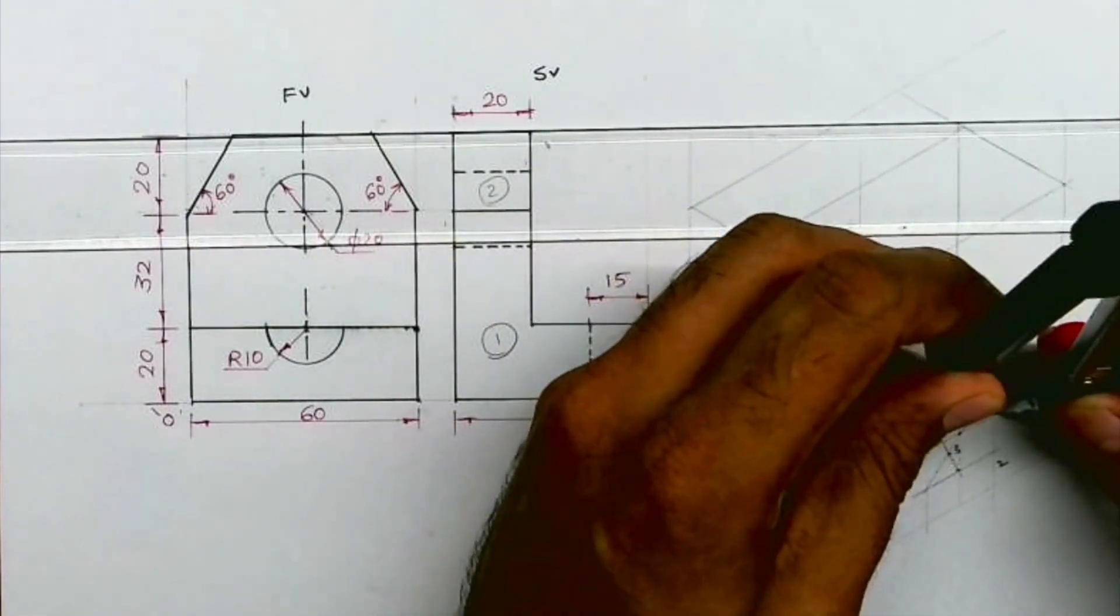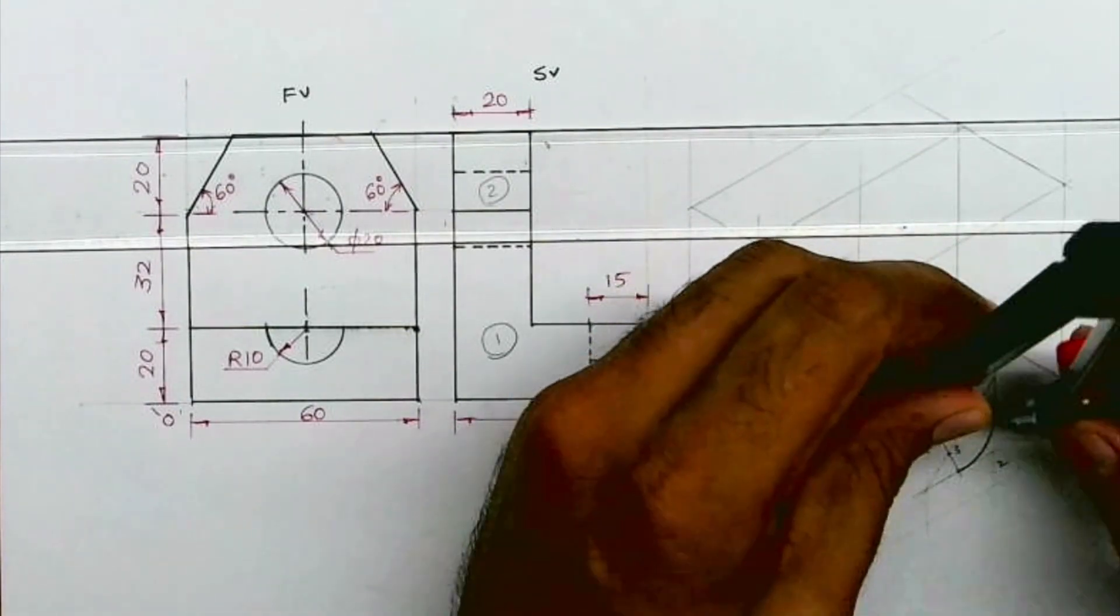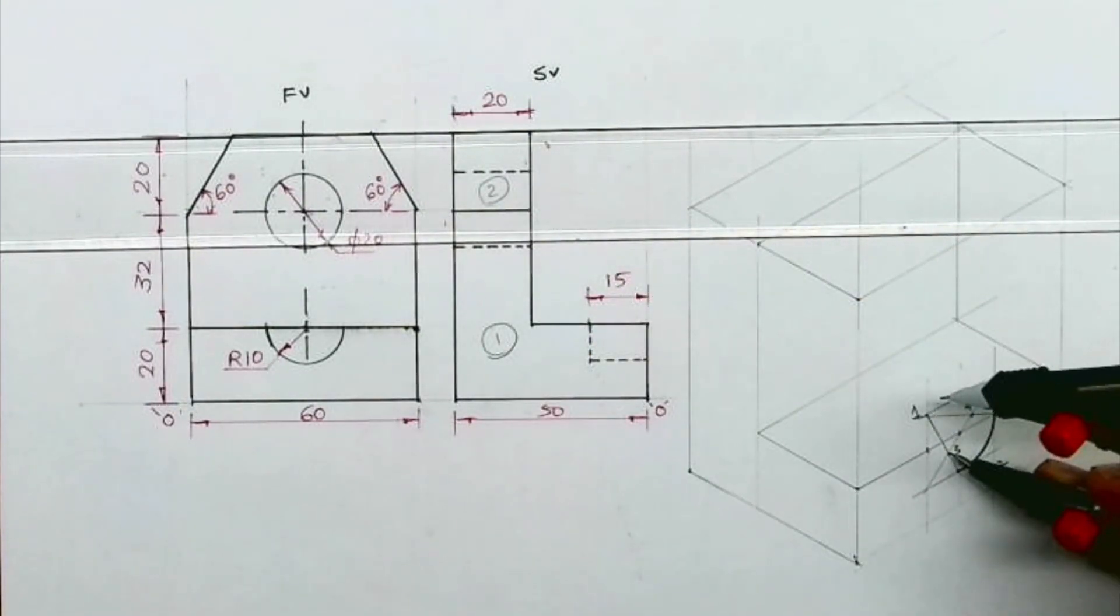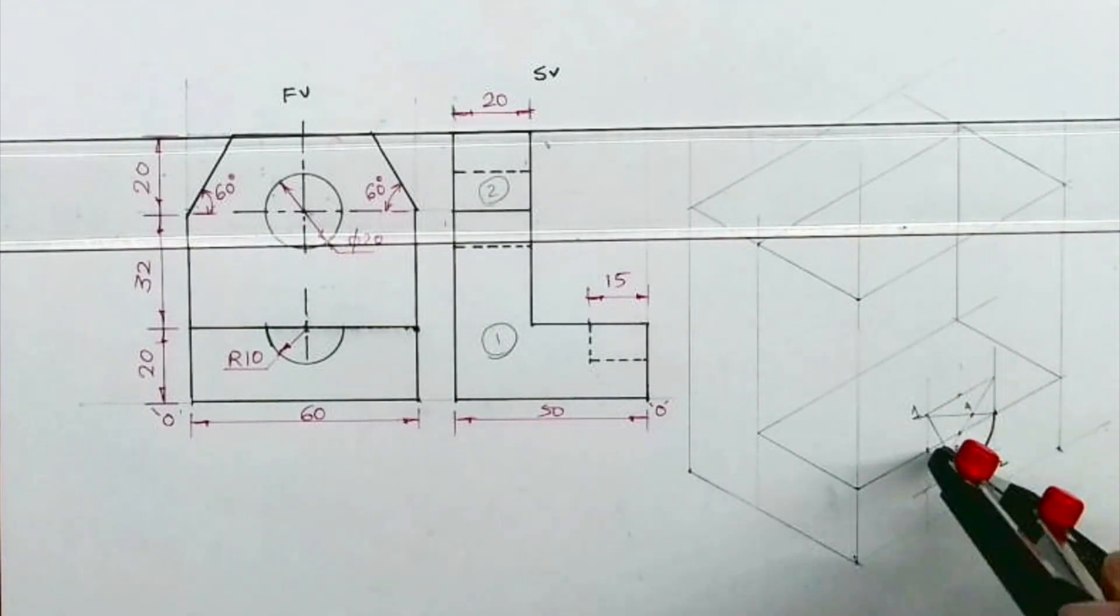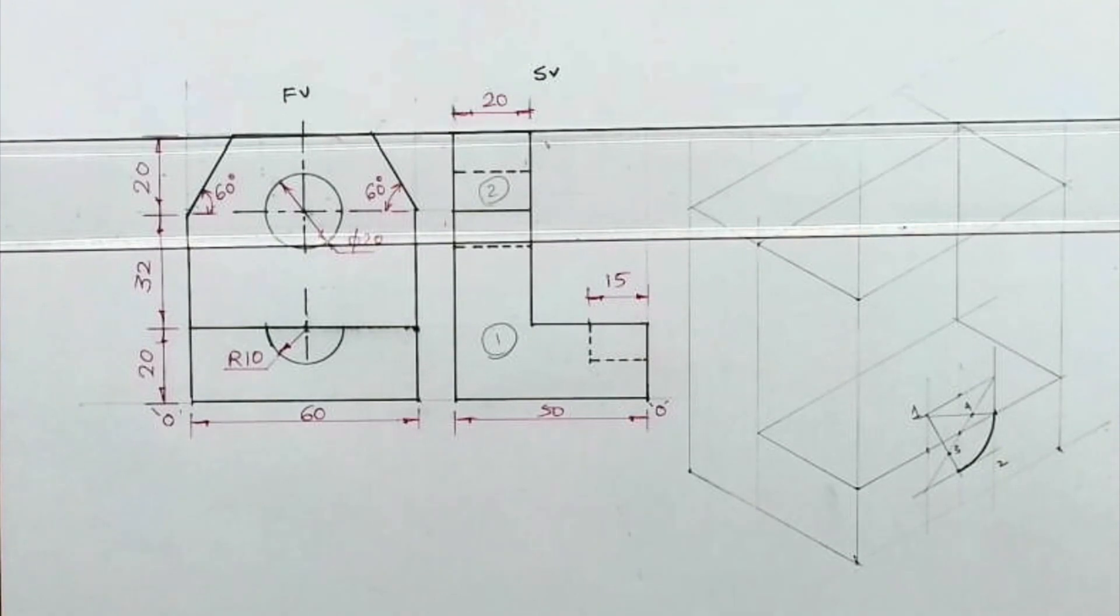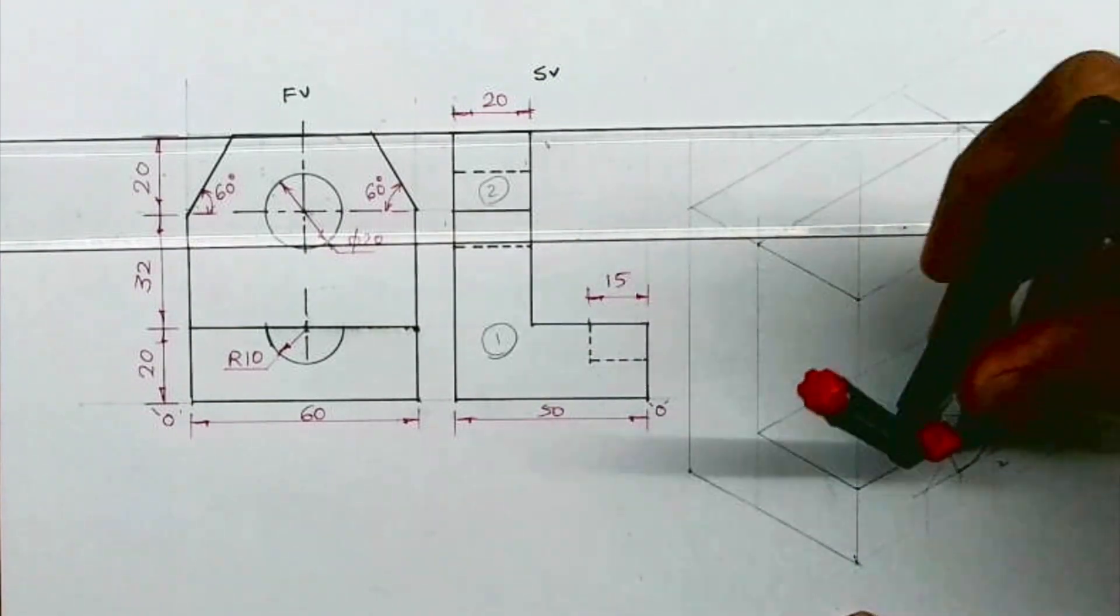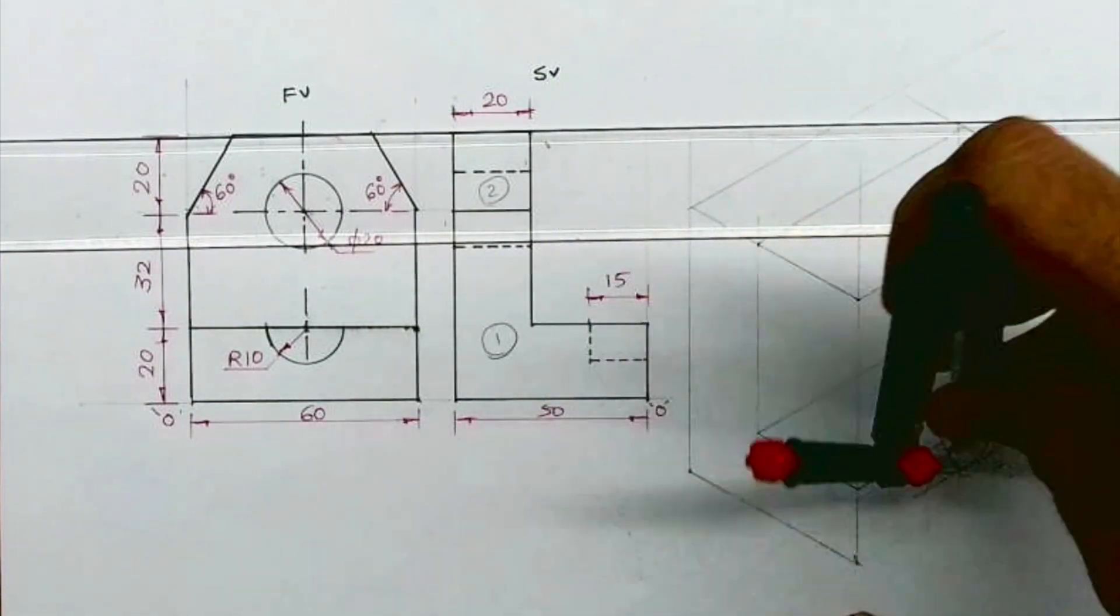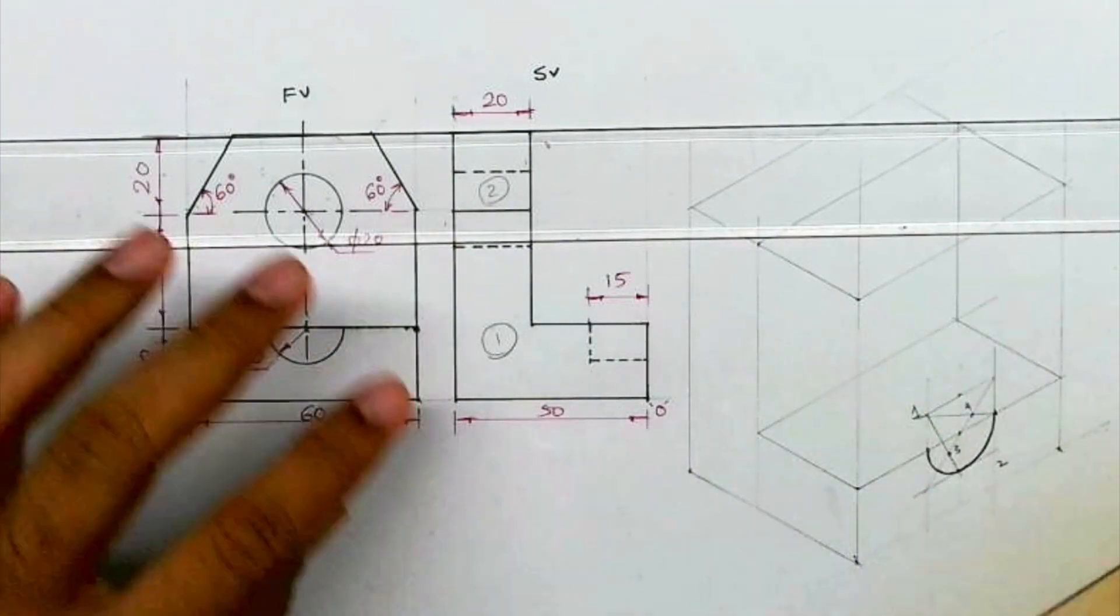Now I'll draw curve from one to m, to that midpoint, and we'll draw curve. Same way two to that point midpoint, we'll draw curve.